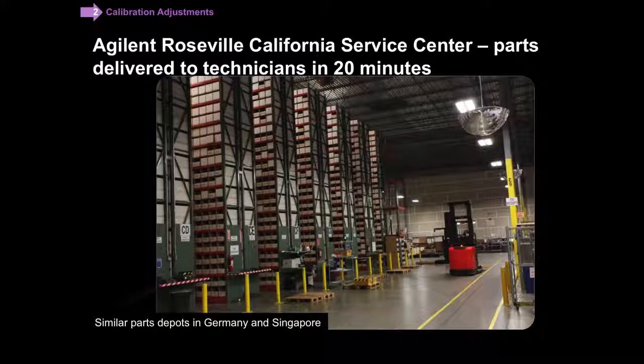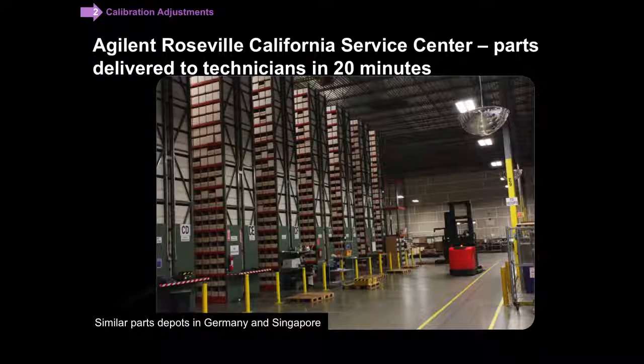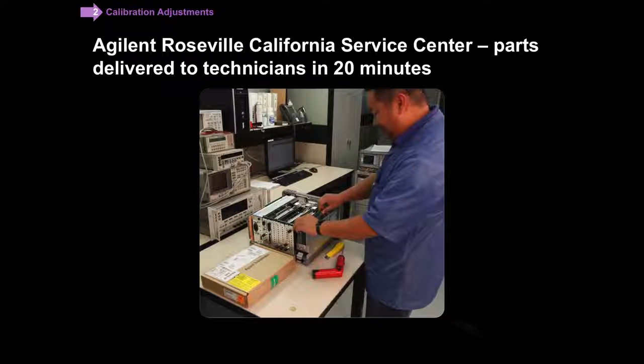Why do we need so many parts there in one location? Well, it really comes down to when the gentleman on the bench here, when he selects a part that he needs to repair an instrument, that part is available less than 20 minutes after he makes that selection. This is how you can see that having that parts depot really allows us to give you the throughput that you're looking for when your instrument needs to be repaired.